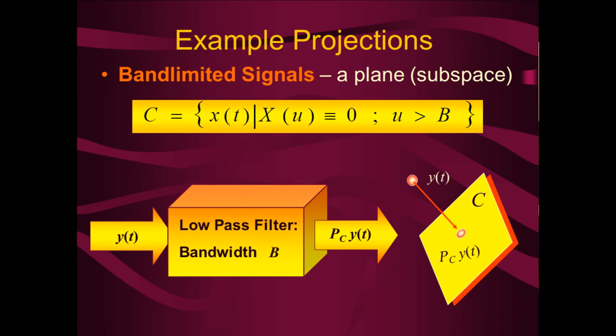The projection onto band-limited signals is also pretty intuitive. Suppose you have a signal that isn't band-limited and you want to project it onto the set of band-limited signals. You simply run it through a low-pass filter: take the Fourier transform, set everything outside the bandwidth B to zero, keep what's inside the interval from minus B to B, and inverse transform it. That is the projection — it's the best we can do, and it is relatively intuitive.